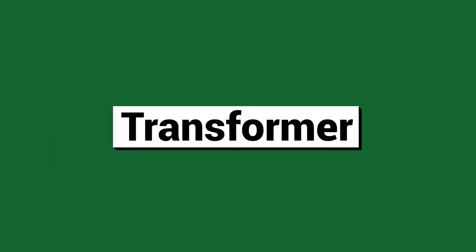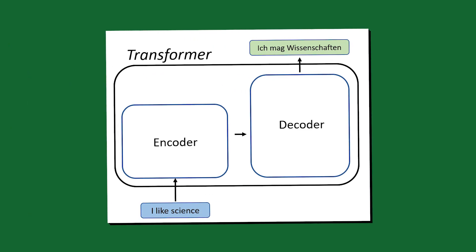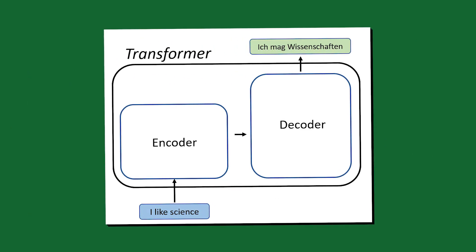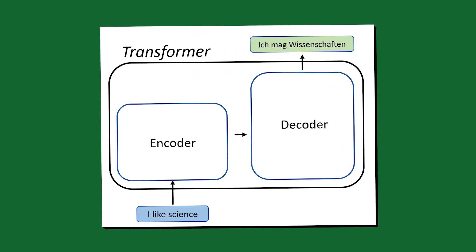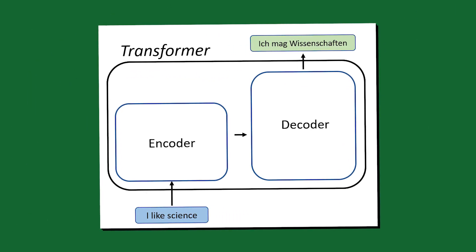Number nineteen: Transformer — and we're not talking about the movie. Transformers are a type of computer program that helps machines understand and use human language. The invention of the Transformer completely revolutionized AI because it can perform many language tasks much better than older models.